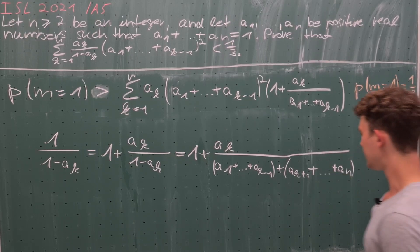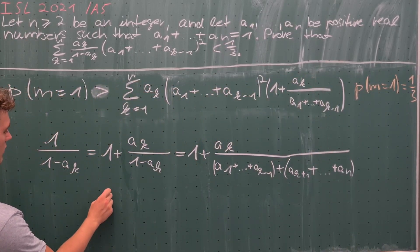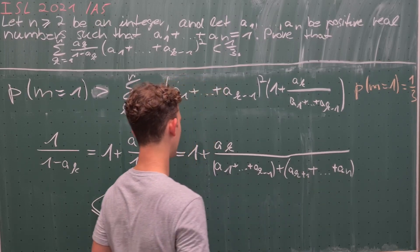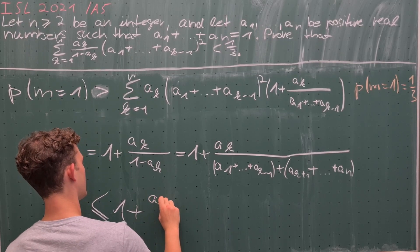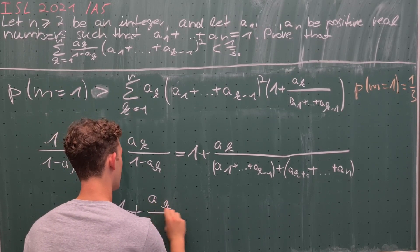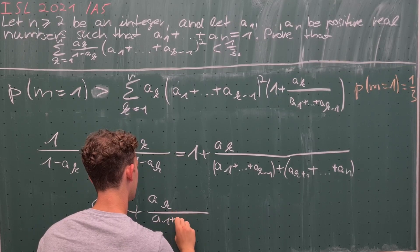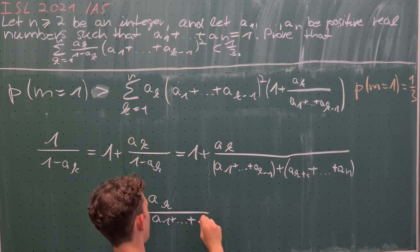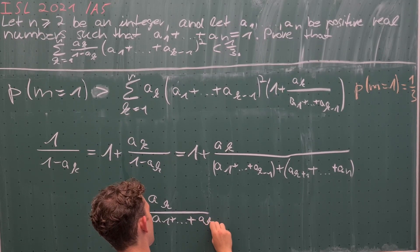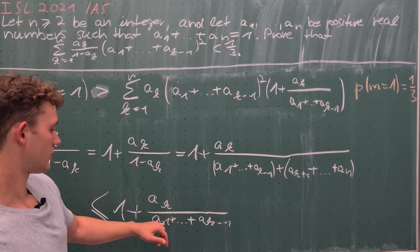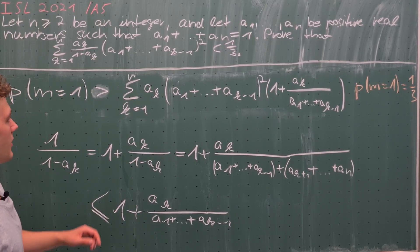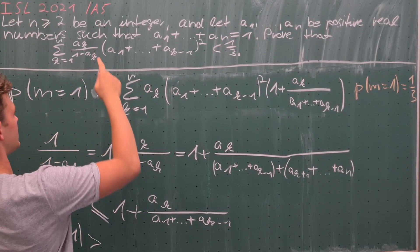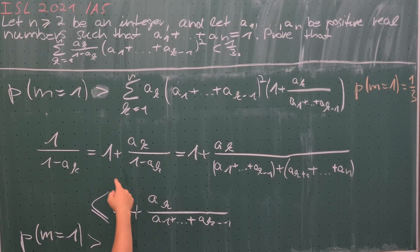But this must be less than, or rather less than or equal, because this could be zero. This is less than or equal to 1 plus a_k over (a_1 plus a_{k minus 1}) because we have decreased our denominator, which increases the value of this sum. And therefore this is larger than or equal to this sum because of this inequality.